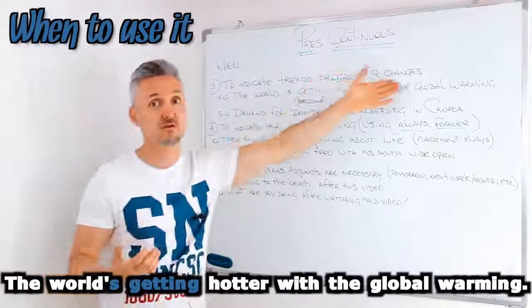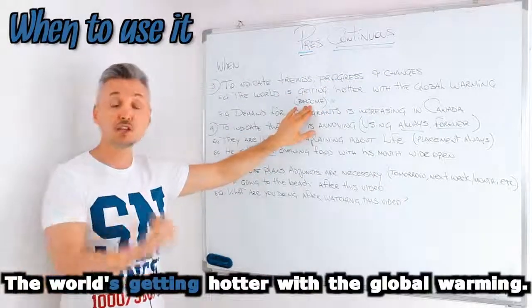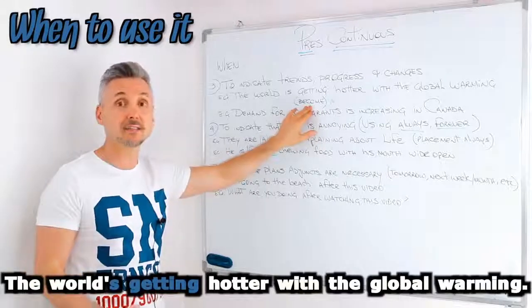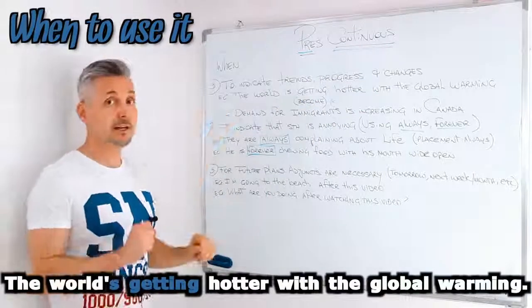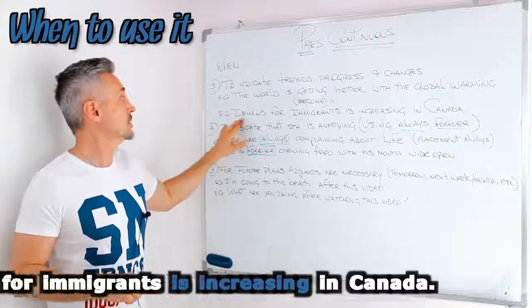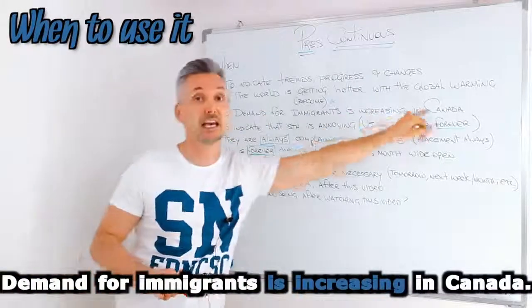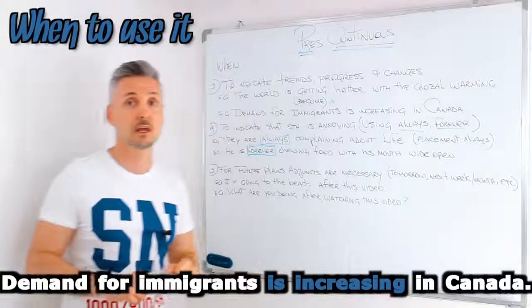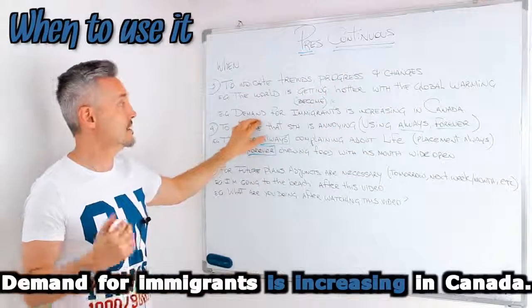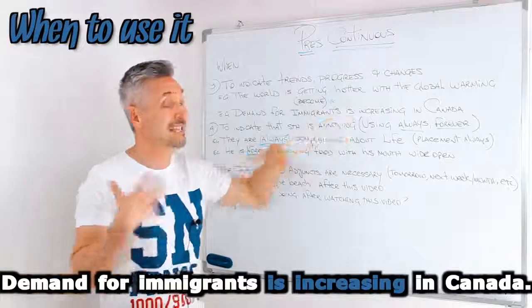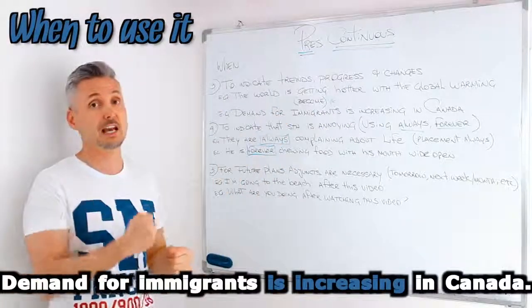So this is a change, right? To get means become here. If you wish to watch a lesson on 'get', you may click here. The second example: demand for immigrants is increasing in Canada. So this is a change — demand for immigrants is increasing. They need immigrants in Canada.